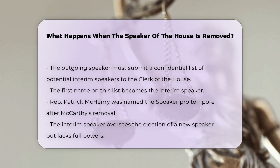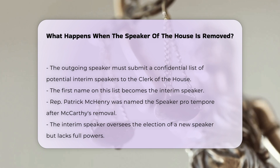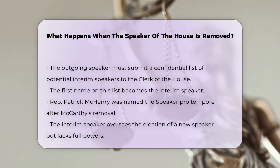As the interim Speaker, McHenry does not have the full powers of a duly elected Speaker, but is tasked with overseeing the election of a new Speaker. The interim Speaker's primary responsibility is to facilitate the election of a new Speaker. This process can be lengthy, as it requires the House to vote as many times as necessary until a candidate receives the majority of the votes from those present and voting.